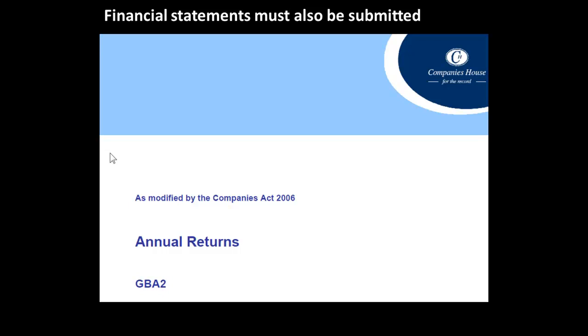Financial statements — in other words the balance sheets that we mentioned, and the profit and loss account or the income statement — also have to be submitted elsewhere, and that's to Companies House.